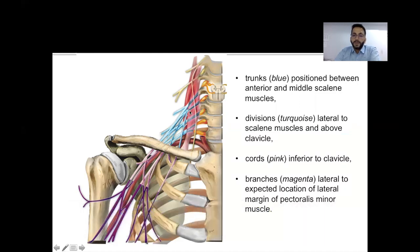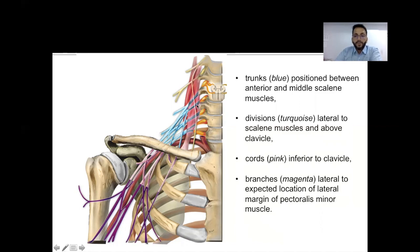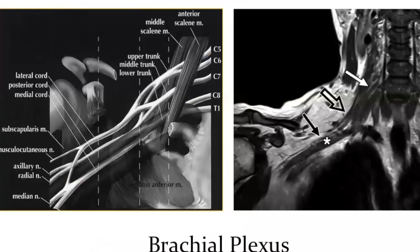Each trunk divides into anterior and posterior divisions, which join to form the cords. The cords travel from the level of the clavicle up to the outer margin of the pectoral muscles. The cords are shown in pink color, and the terminal branches are shown in magenta. The roots are in yellow, trunks in blue, divisions in turquoise, cords in pink, and branches in magenta.